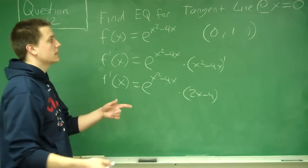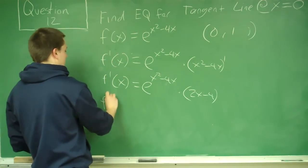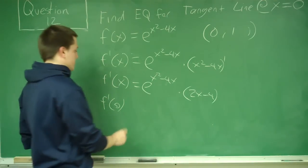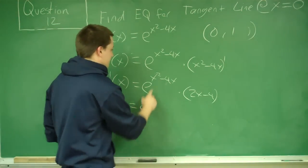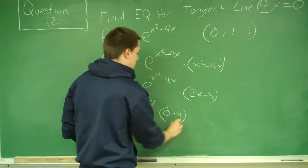Now we can go ahead and plug in our x value, which is 0, into here, and that will tell us what the slope of the tangent line is at 0. So we get e to the... this is just 0, times 0 minus 4.